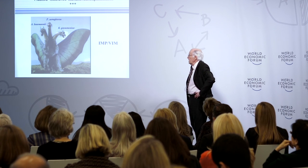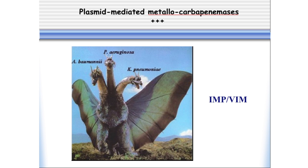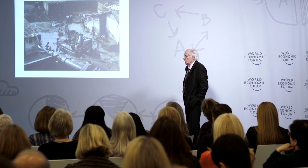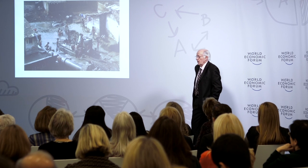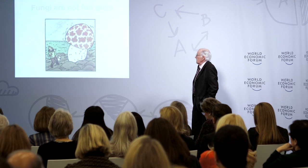Intensive care units are some kind of factory to build very resistant microorganisms — for example, Acinetobacter, Pseudomonas aeruginosa, and Klebsiella pneumoniae, which can be responsible for nosocomial infections. There are countries in which resistance is extremely high, like India, just because people use a lot of antibiotics and also because hygienic measures are really suboptimal, as you can see on this slide.